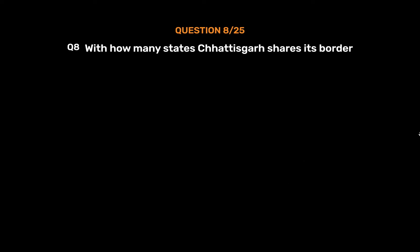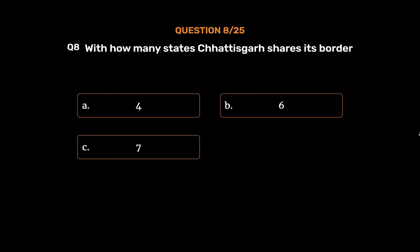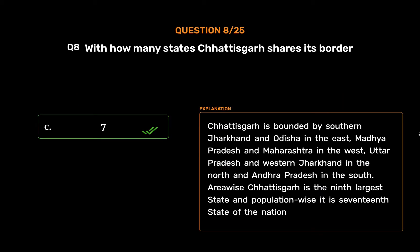Question No. 8: With how many states does Chhattisgarh share its border? Option A: 4. Option B: 6. Option C: 7. Option D: 8. The correct answer is Option C: 7. Chhattisgarh is bounded by Southern Jharkhand and Odisha in the east, Madhya Pradesh and Maharashtra in the west, Uttar Pradesh and Western Jharkhand in the north, and Andhra Pradesh in the south. Area-wise, Chhattisgarh is the ninth largest state, and population-wise it is the 17th state of the nation.